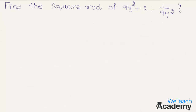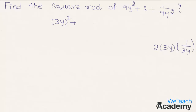Here we know that 9y² is a perfect square and its root is 3y, so we can write this as (3y)². The second term is 2, which we can write as 2 × 3y × 1/3y. Here 3y and 3y get cancelled, giving us the value 2, which remains unchanged.